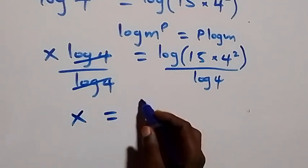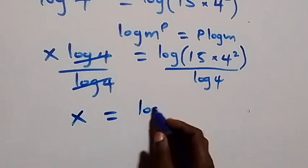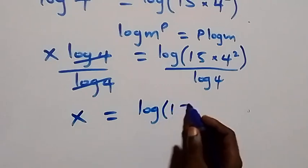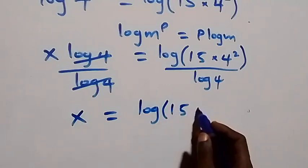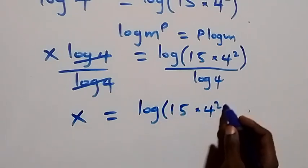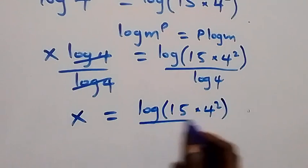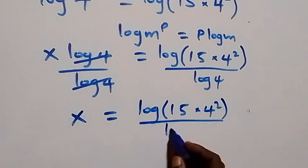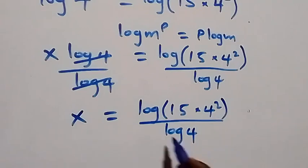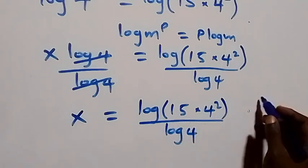Also divide this side by log 4. Here log 4 cancels out and we have x equals to log of 15 times 4 squared over log 4.